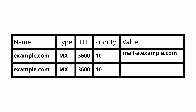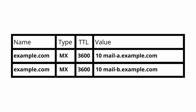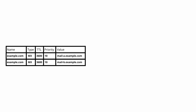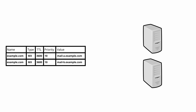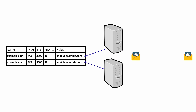An MX record looks similar to other DNS records and has a name, time to live, and a value. The major difference is the priority field, which sometimes is combined with the value field. Mail will be sent to the record with the lowest priority. If there are multiple records with the same priority, then mail will flow evenly between the servers in a load-balanced fashion.